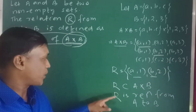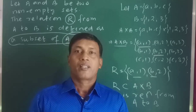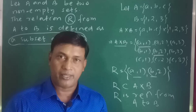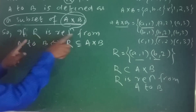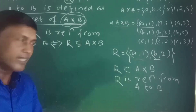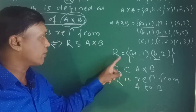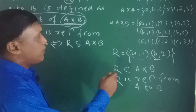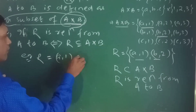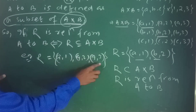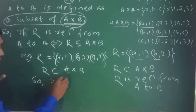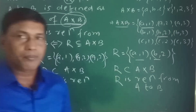Relation means a subset of the Cartesian product. Relation is nothing but another form of a set. Which set can be a relation? The set which is a subset of A×B — that will be the relation from A to B. If R is a relation, then R is a subset of A×B. We can also take R = {(A,1),(A,2),(A,3)}: these three elements are present in A×B, so R is also a relation from A to B. Any subset of A×B is a relation.